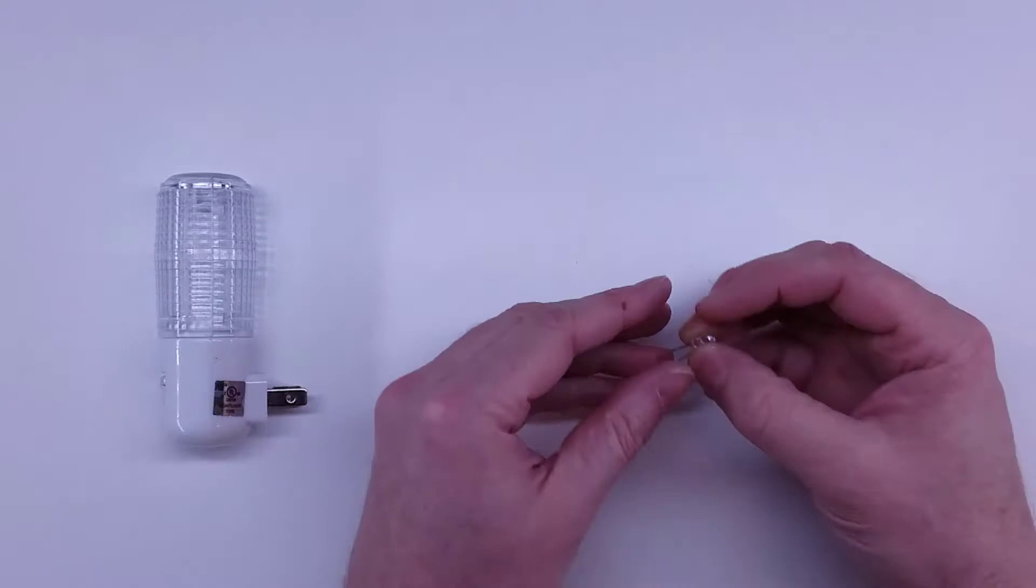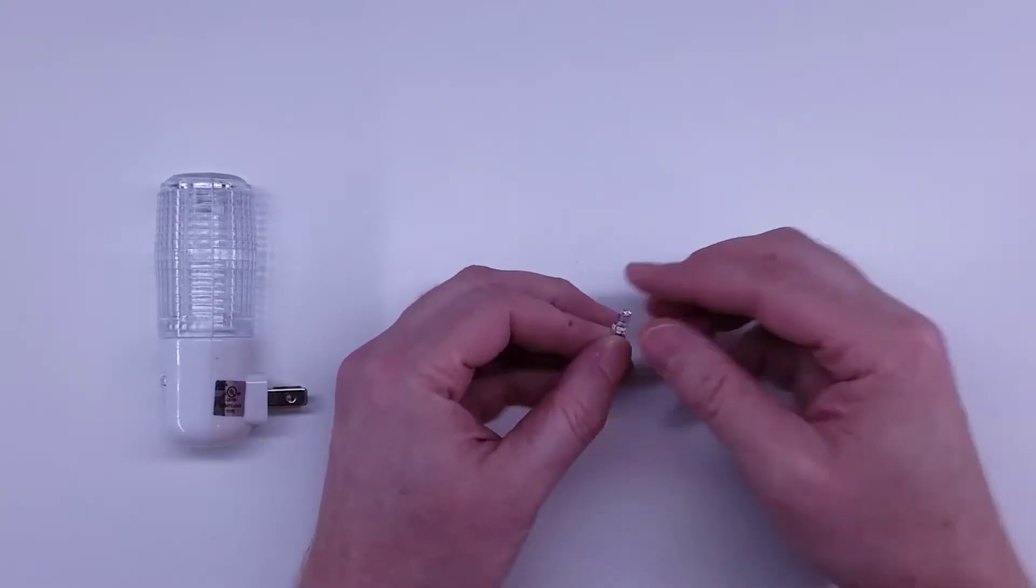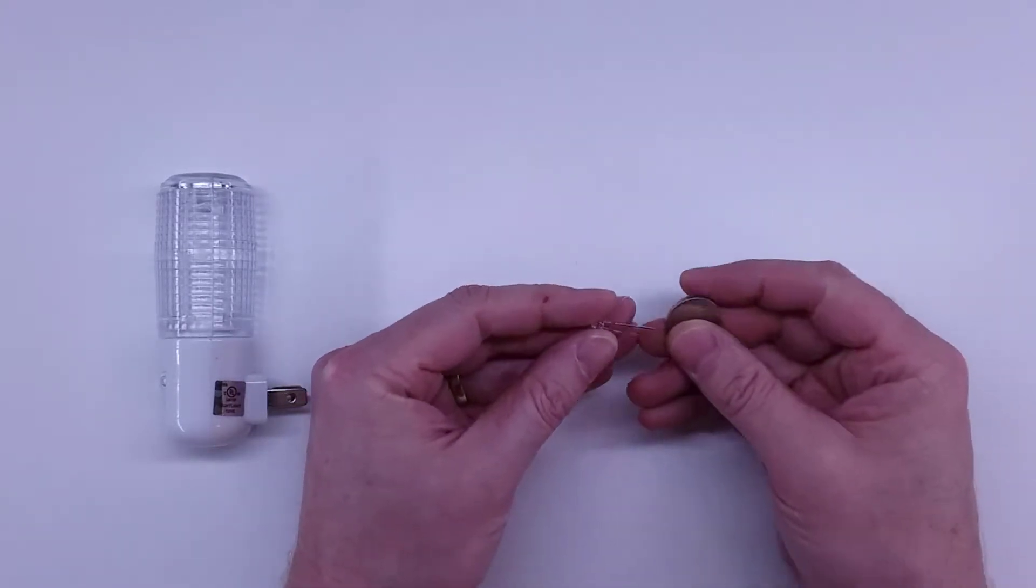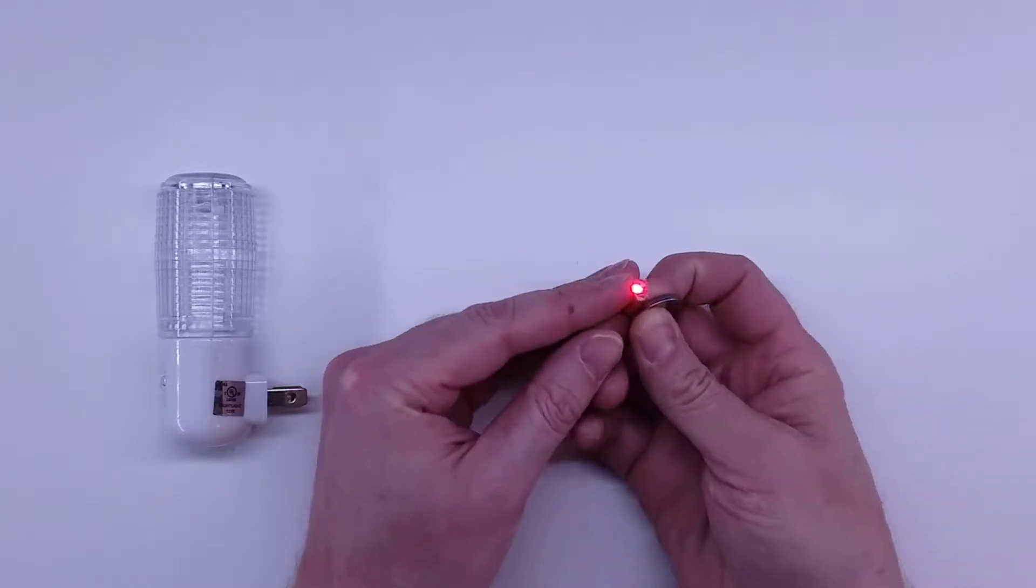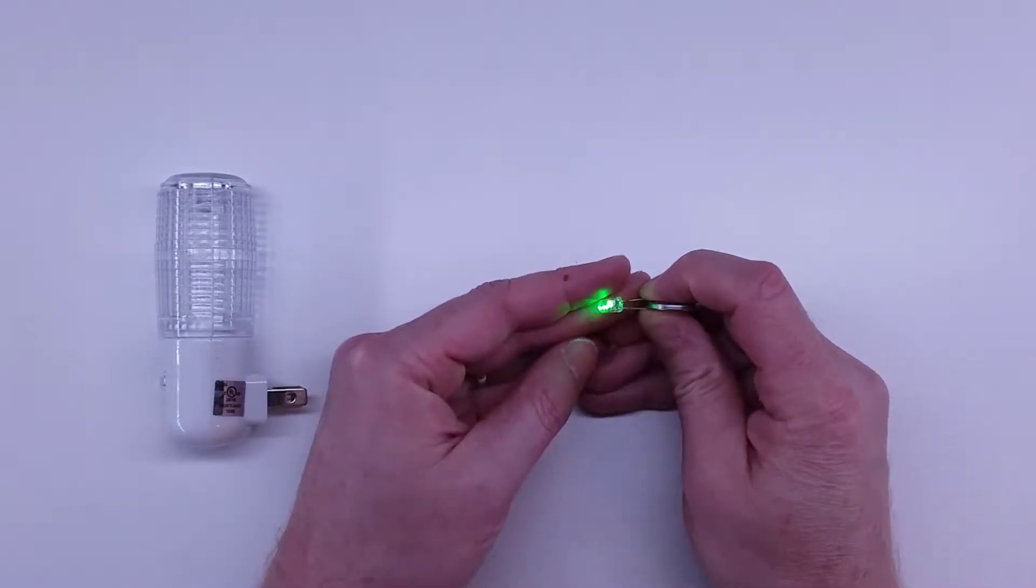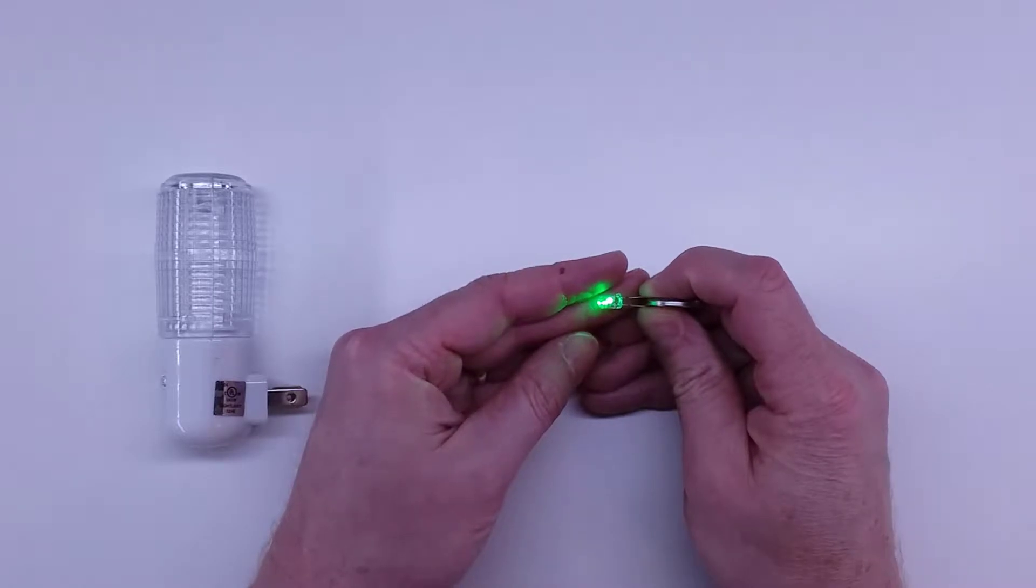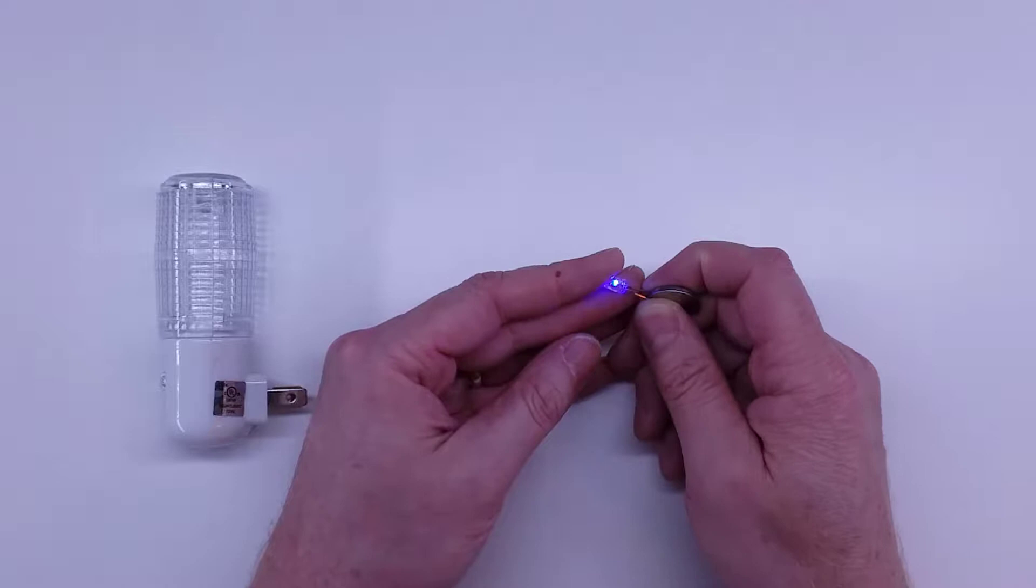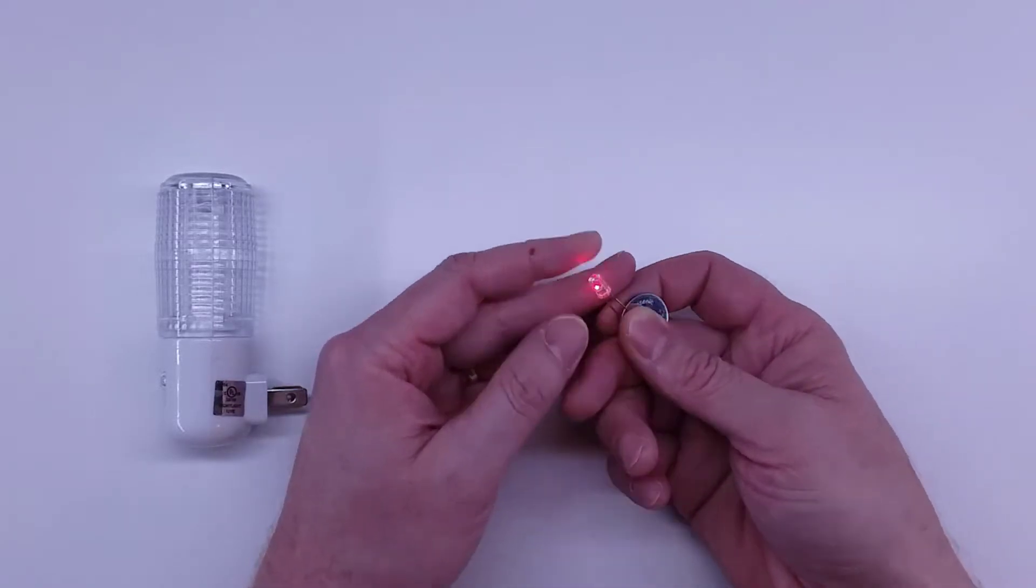They have a little tiny chip in them and RGB LEDs - there's three of them in there. When you power it, you'll see it cycles through the colors: red, green, and then eventually blue.